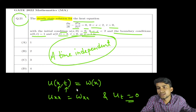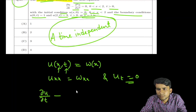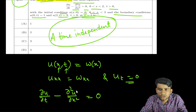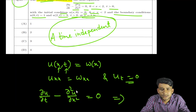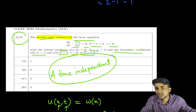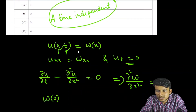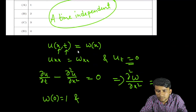Therefore, substituting into the heat equation ∂u/∂t − ∂²u/∂x² = 0, we simply get −d²w/dx² = 0. The boundary conditions become w(0) = 1 and w(2) = 3.